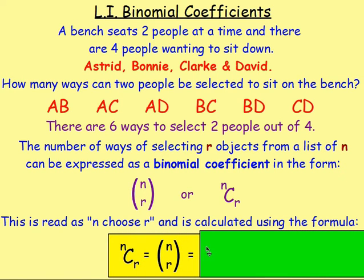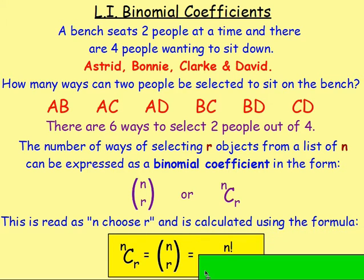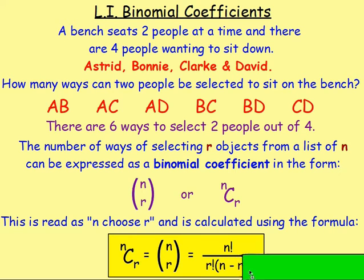n choose r is calculated using the formula: n factorial over r factorial times (n minus r) factorial. Remember, n is how many objects you have and r is the number that you want to choose.